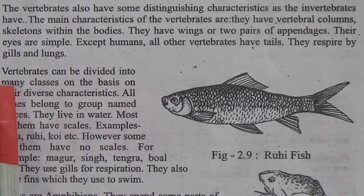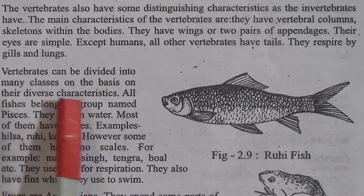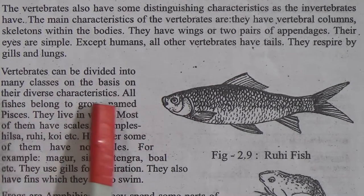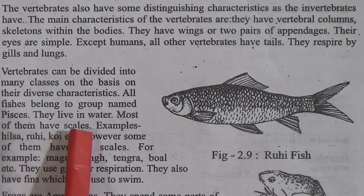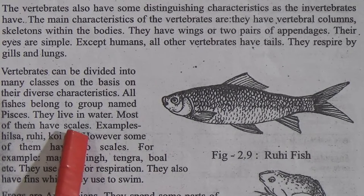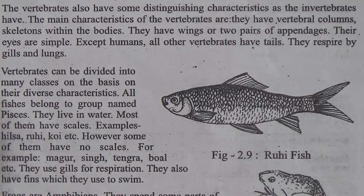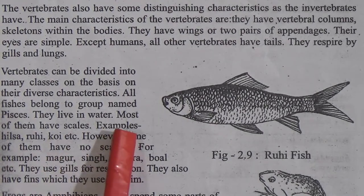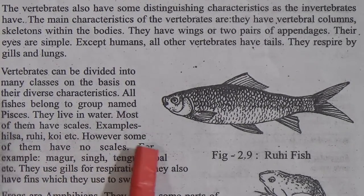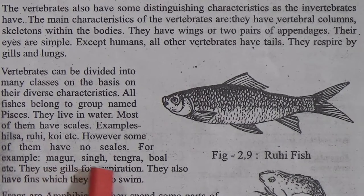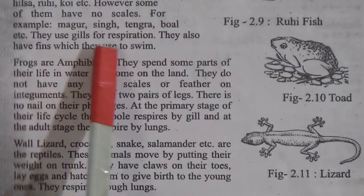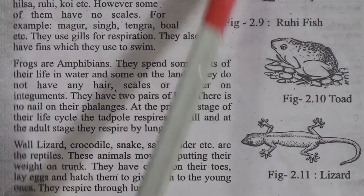Vertebrates can be divided into many classes. All fishes belong to the group named Pisces. They live in water and most of them have scales — examples include hilsa, shard, koi, etc. However, some fish have no scales, for example magur, shing, and catfish. They use gills for respiration and also have fins which they use to swim.